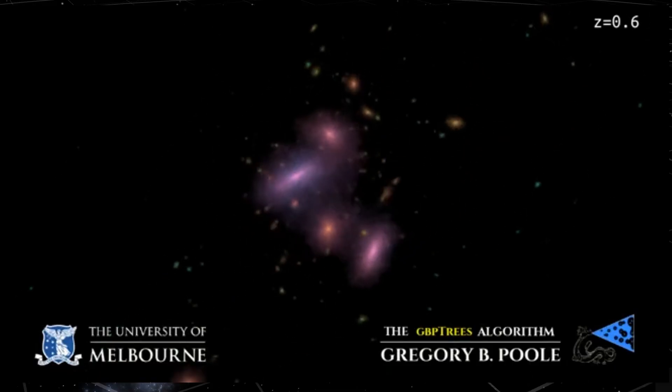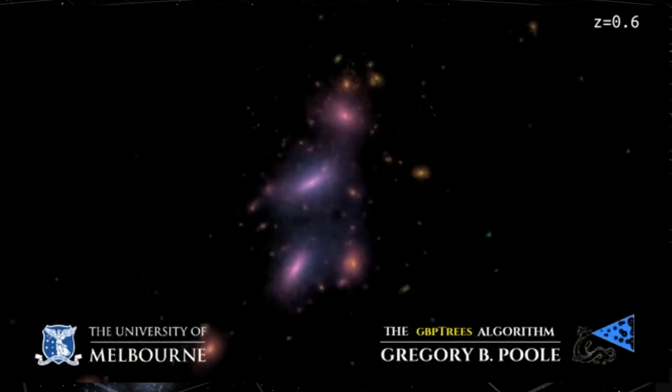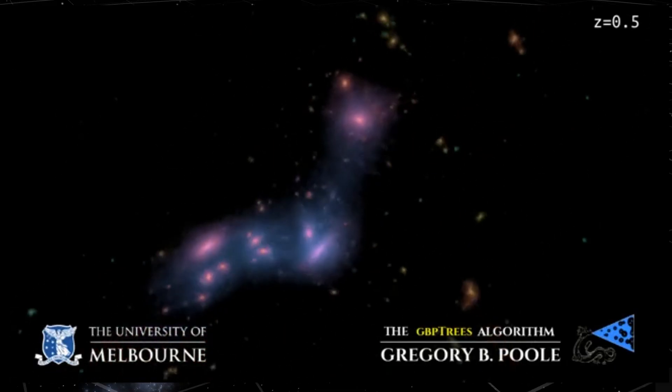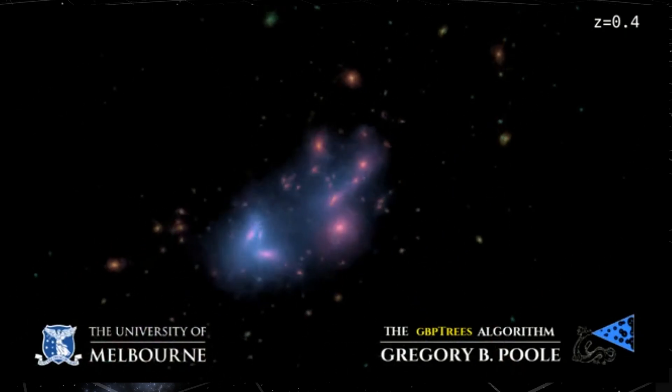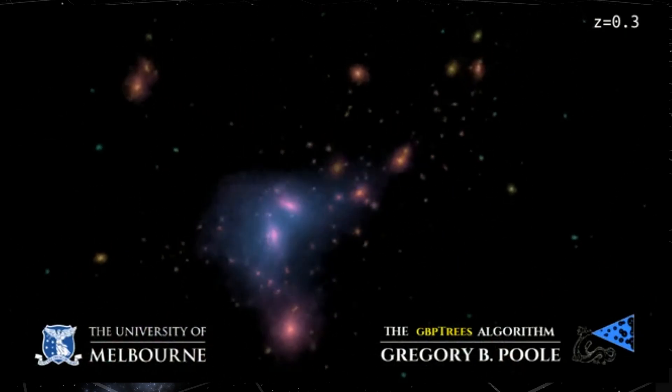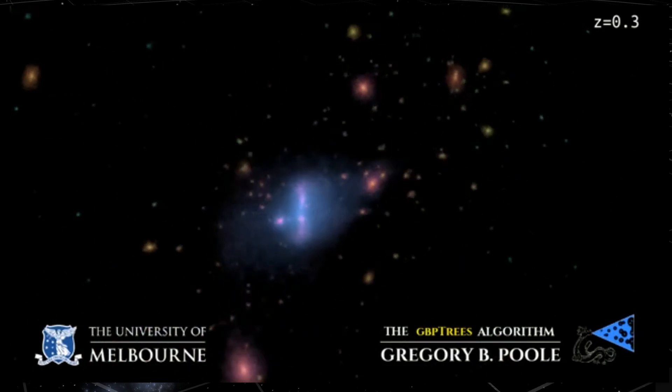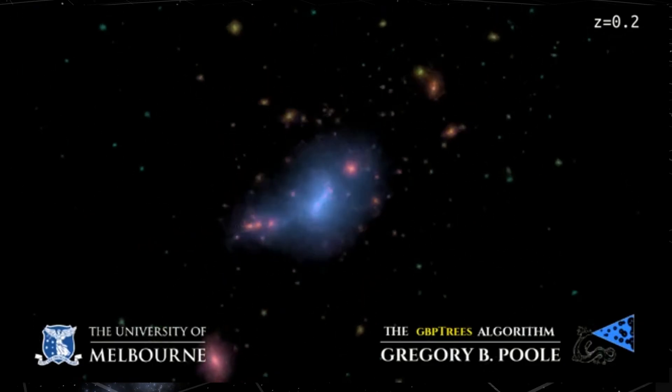One potential explanation comes from a simulation by Gregory Poole that shows how smaller galaxies eventually form into larger galaxies and how their spin eventually stabilizes and becomes essentially perpendicular. As these smaller galaxies slowly come closer together and combine into a larger, more massive galaxy, they will probably acquire a spin that's more perpendicular — creating the galaxies we're observing.